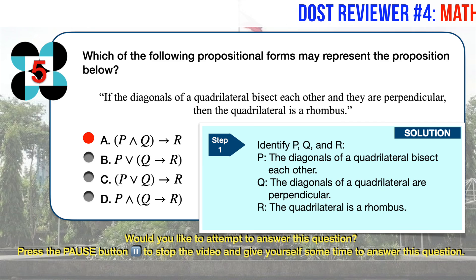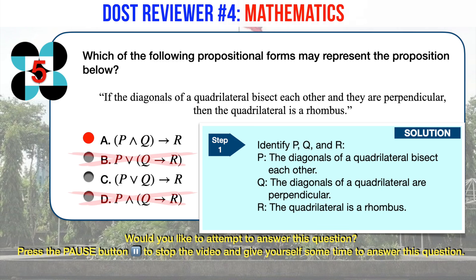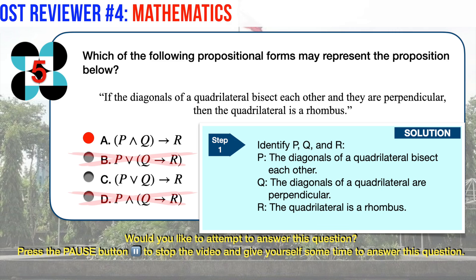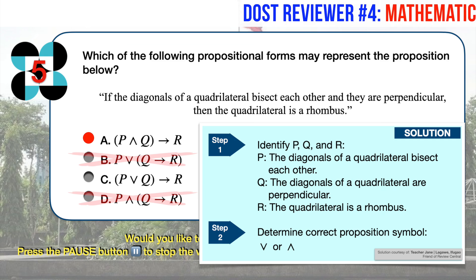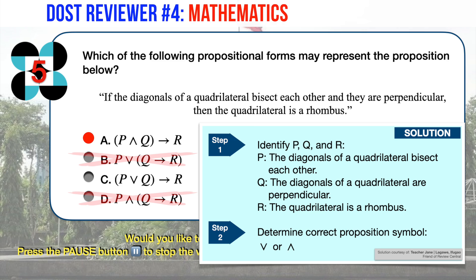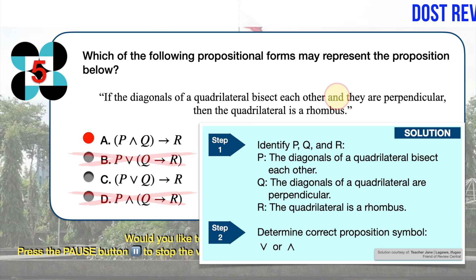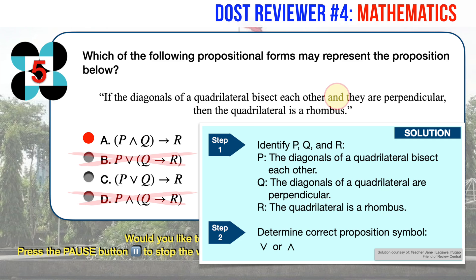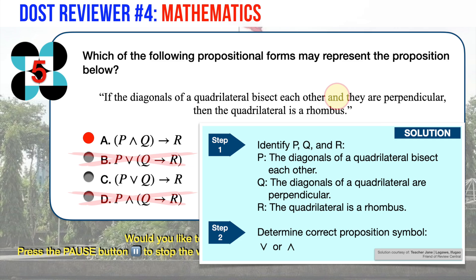We can quickly eliminate answer choices B and D because their parentheses placements are obviously wrong. That leaves A and C. Answer A uses AND, while C uses OR. Our given proposition uses AND rather than OR, meaning both P and Q must be true for R to be true — the diagonals must bisect each other and be perpendicular for us to conclude the quadrilateral is a rhombus. The correct answer is A.